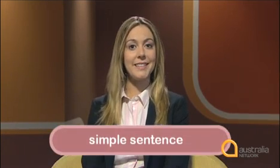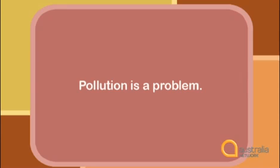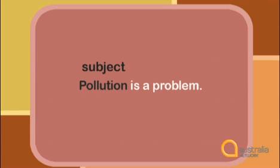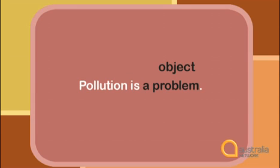What is the range of sentence types? There is a simple sentence, like this: Pollution is a problem. This example shows you the basic structure — a subject, 'pollution', a verb, 'is', and the object, 'a problem'.